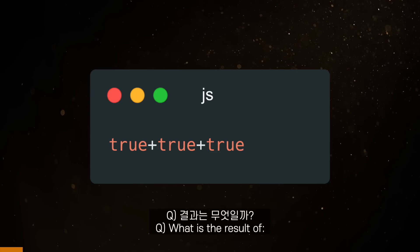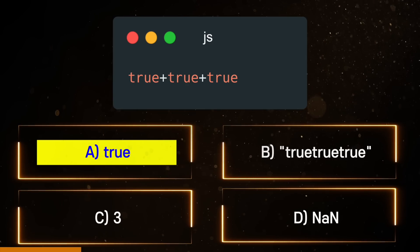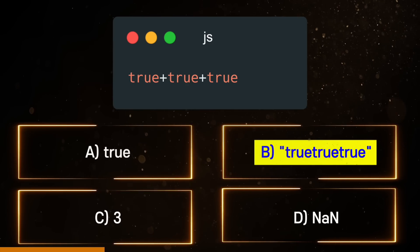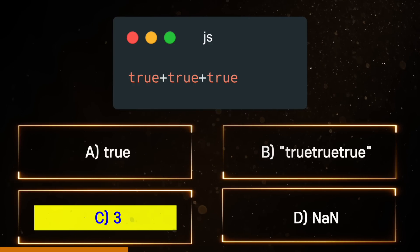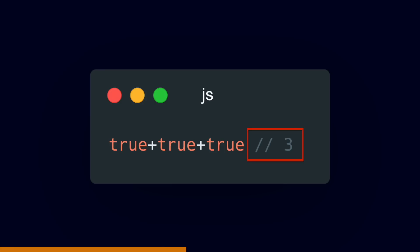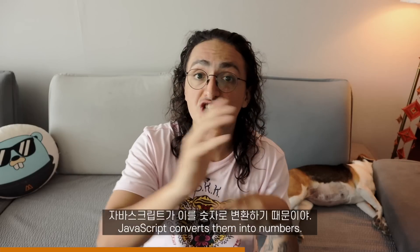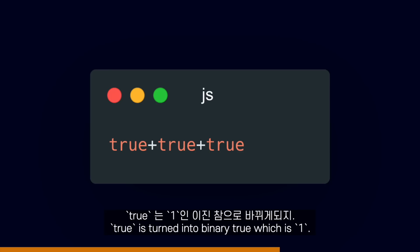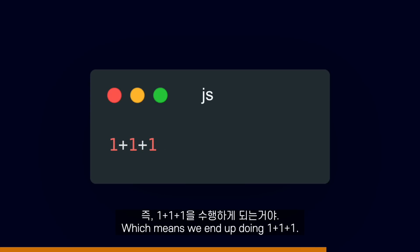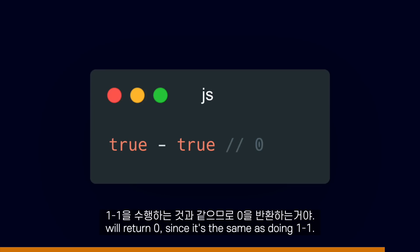Let's practice a bit. What is the result of true plus true plus true? A, true. B, true true true. C, 3. D, not a number. The answer is C. True plus true plus true equals 3. This happens because when you use the plus operator with booleans, JavaScript converts them into numbers. True is turned into binary, which is 1. Which means we end up doing 1 plus 1 plus 1. On the same line, true minus true will return 0, since it's the same as doing 1 minus 1.